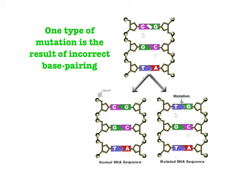Mutations sometimes do happen — this process isn't 100% error-proof. For example, if the original DNA had C-G, G-C, and T-A, sometimes during replication a mistake can be made. One side might replicate correctly with matching base pairs, but the other side might have an incorrect pair — for instance, a G from the original strand paired with a T instead of the correct base. We call that a mutation. It's simply an incorrect base pair resulting from an error during replication.